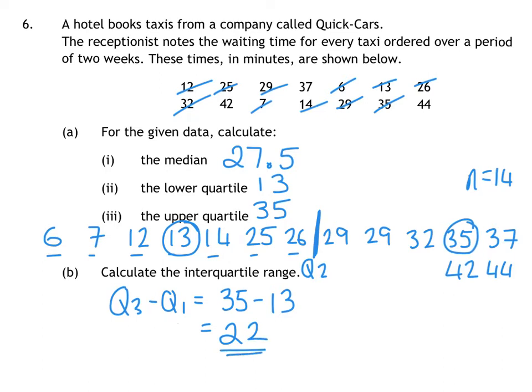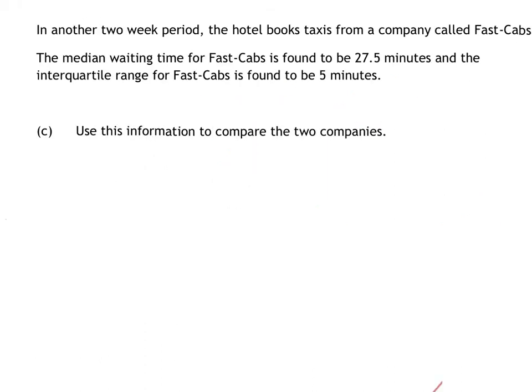Just a reminder before I go on, we're talking about a hotel booking taxis. This was the waiting time for taxis ordered by a company called Quick Cars, and our interquartile range was 22. In another two-week period, we have another company. It has a median of 27.5 and an interquartile range of 5. If I remember from the last example, my median was also 27.5. So both taxi companies have the same median.